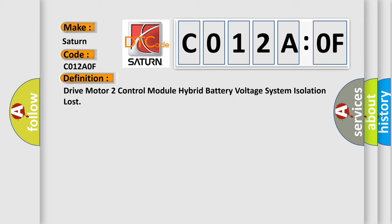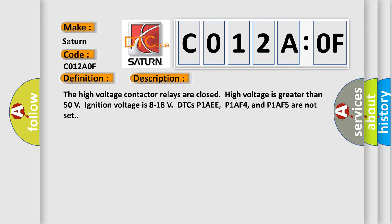And now this is a short description of this DTC code. The high-voltage contactor relays are closed. High voltage is greater than 50 volts. Ignition voltage is 8 to 18 volts.